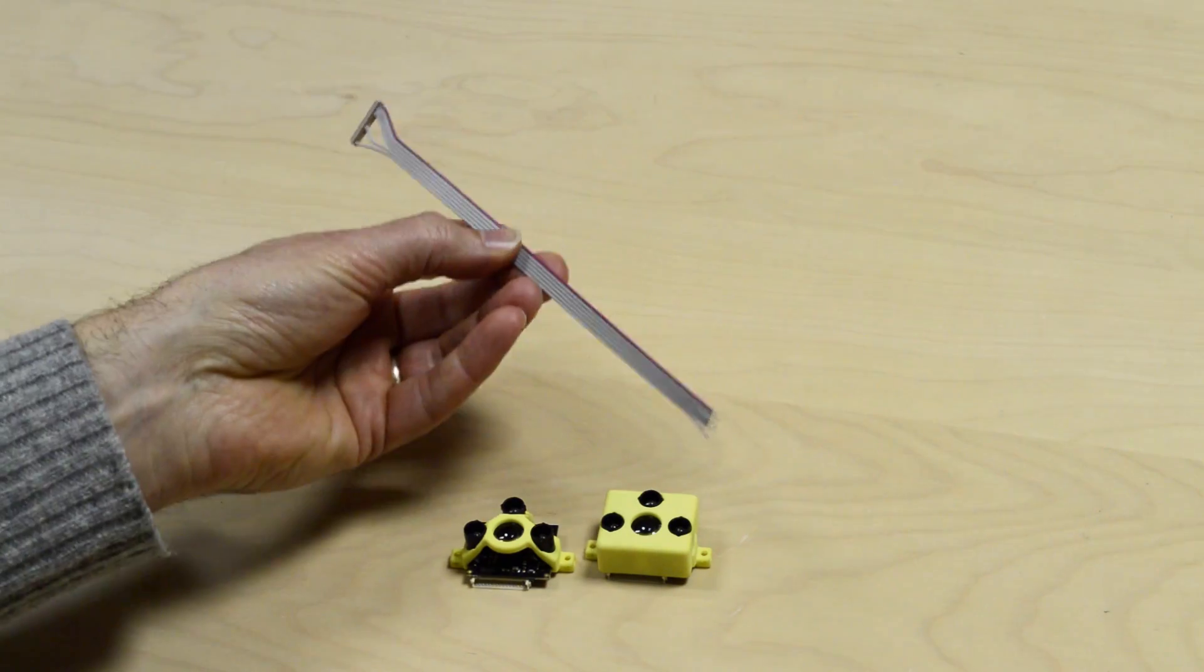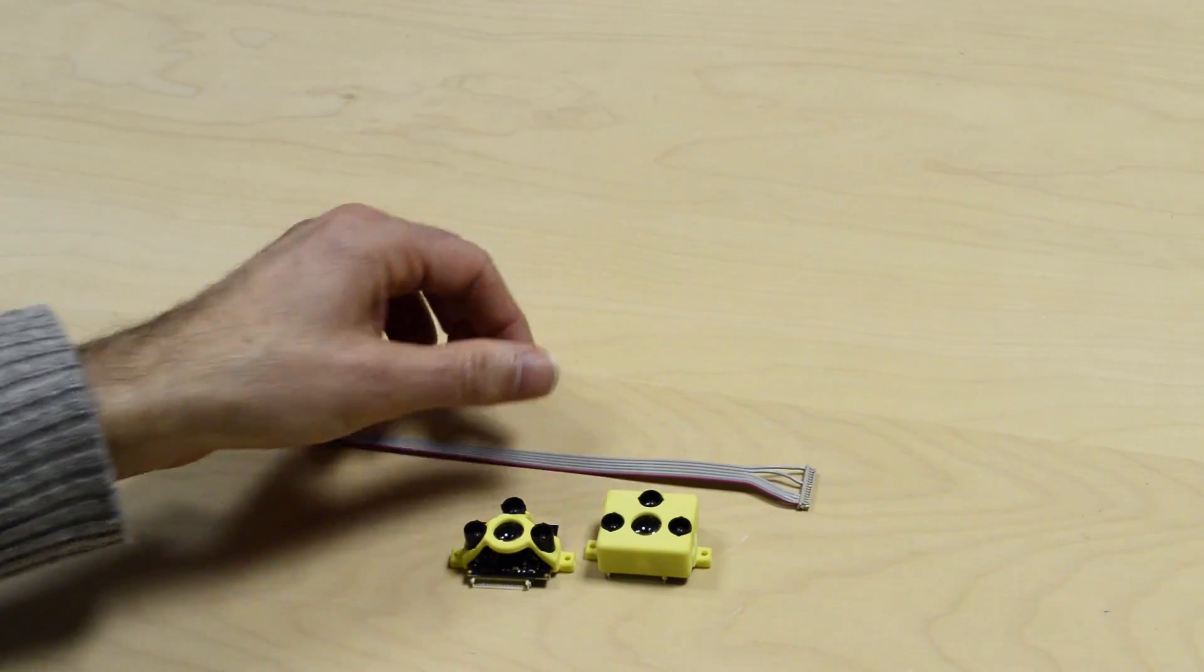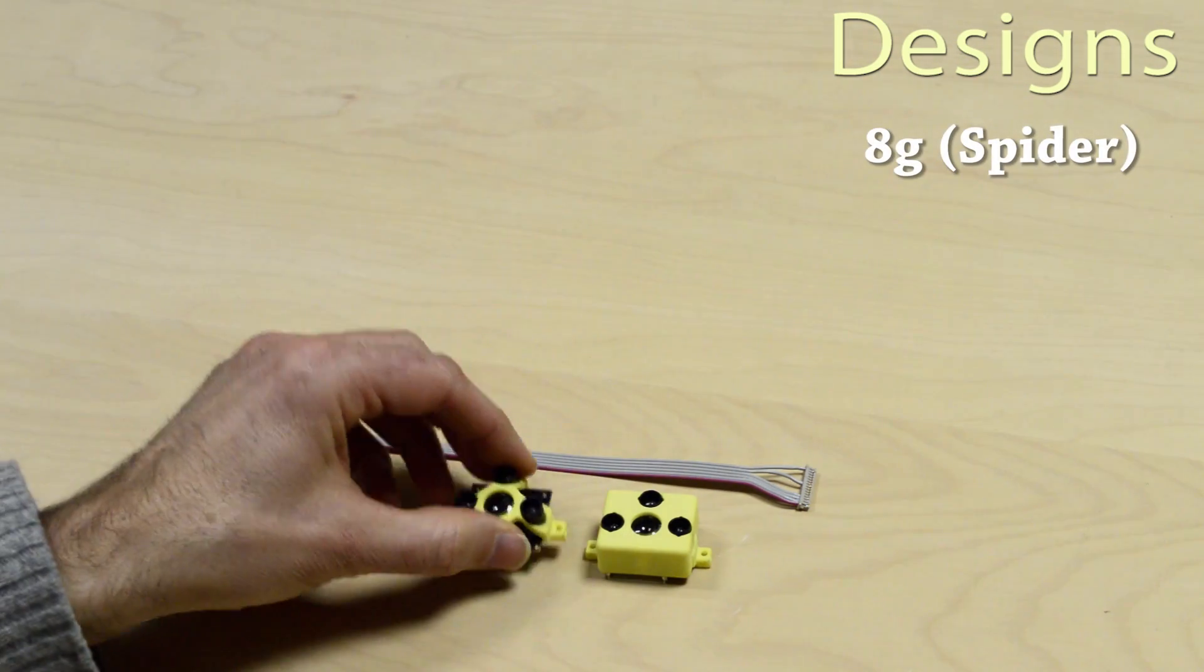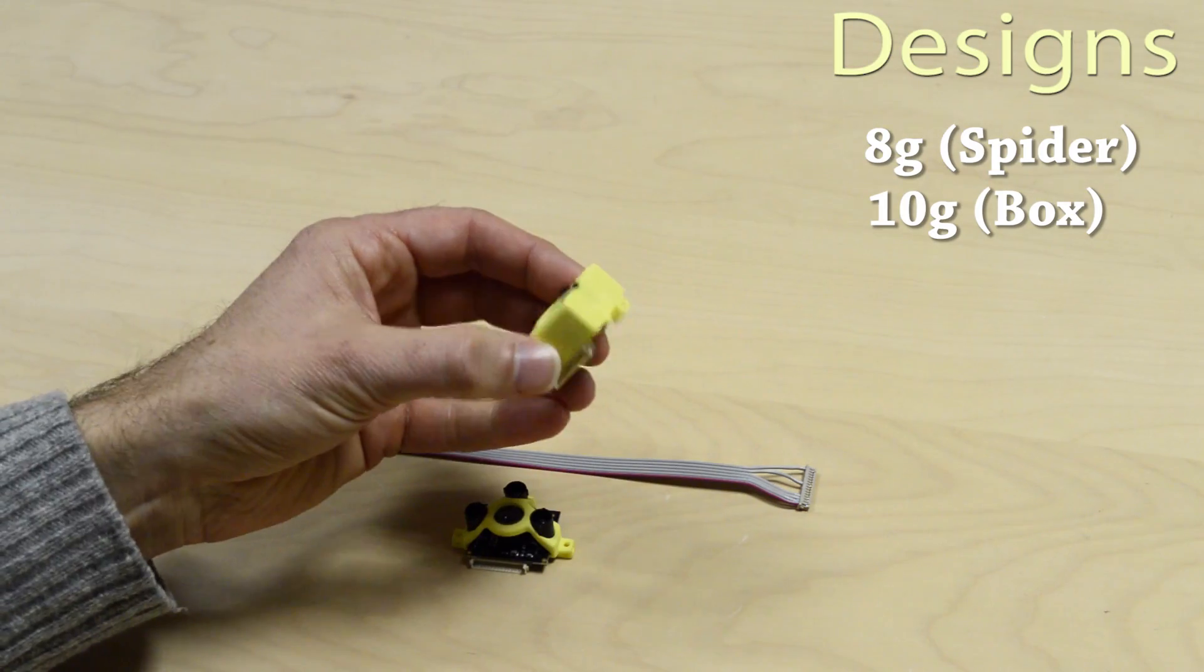Terroranger 1 ships with an open-ended cable for power and data transfer, and there are two designs. This is the Spyder design, it weighs just 8 grams, and this is the box design that weighs 10 grams.